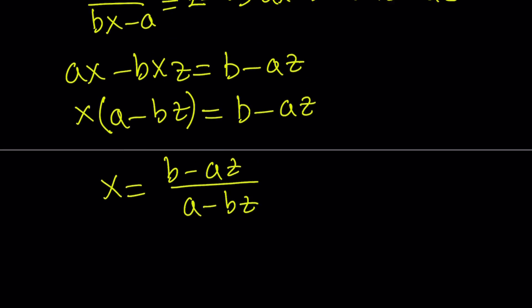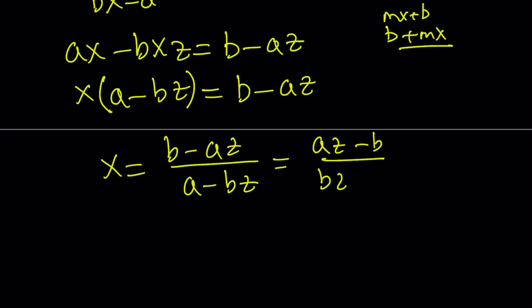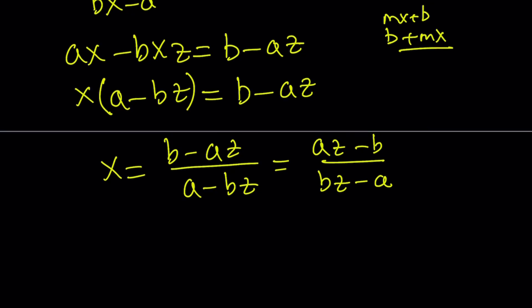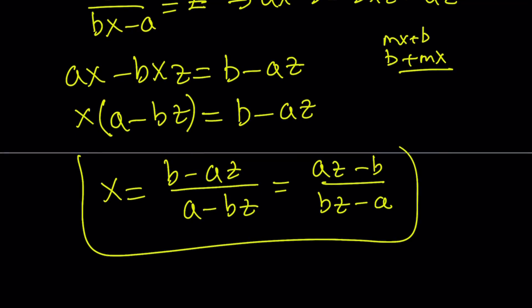One thing I'd like you to do here is to negate both the numerator and the denominator, because you want to have the main variable first — kind of like standard form, like how we write mx plus b for linear functions. So let's write it as az minus b divided by bz minus a. You can obtain this by multiplying both the top and the bottom by negative one. So x is equal to that.